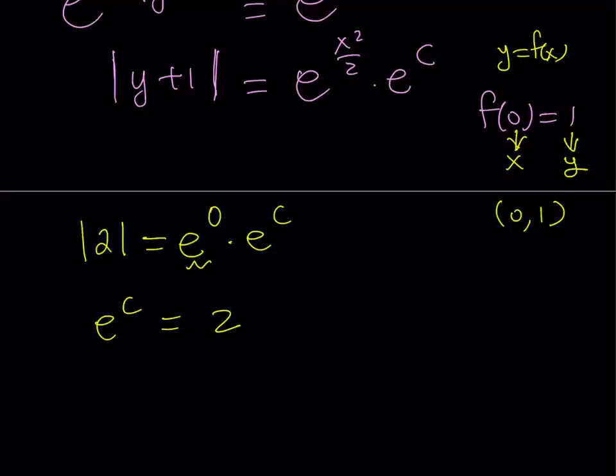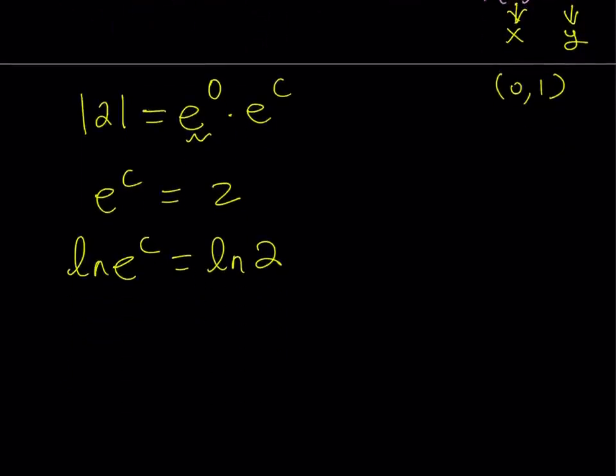Well, if e to the power c equals 2, then you find by ln-ing both sides, right? Kind of like a word, ln both sides. You get ln e to the power c, but that is equal to c because you can move the c forward.